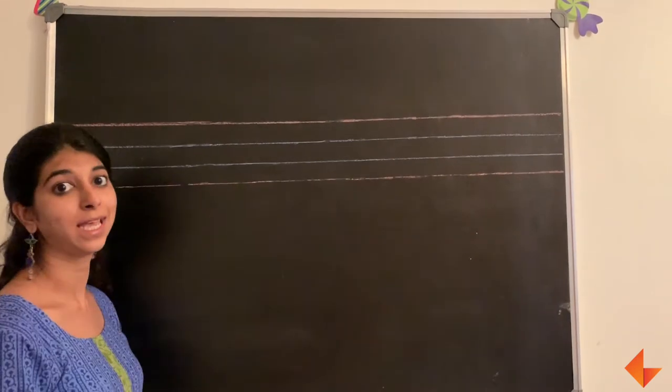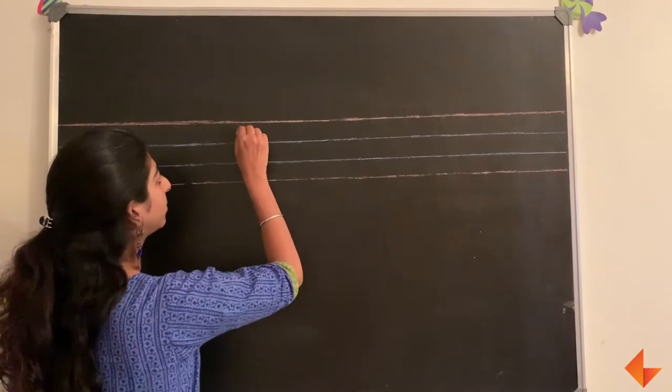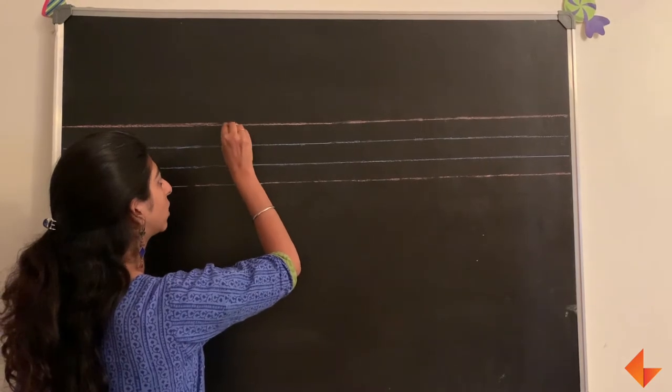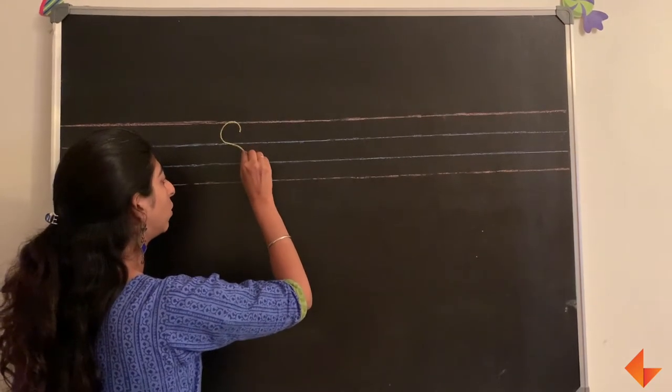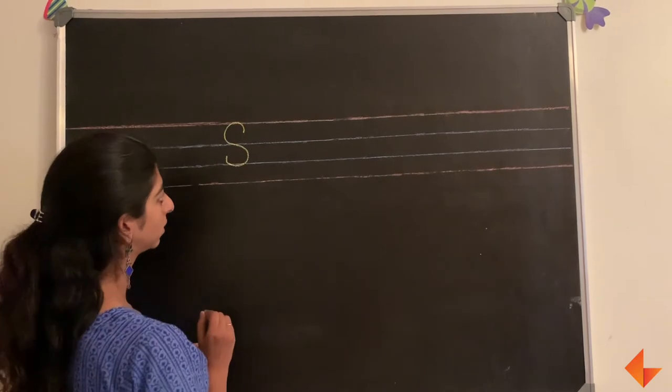This is how you write the letter S. Start from the top, draw a curve all the way down and finish the curve.